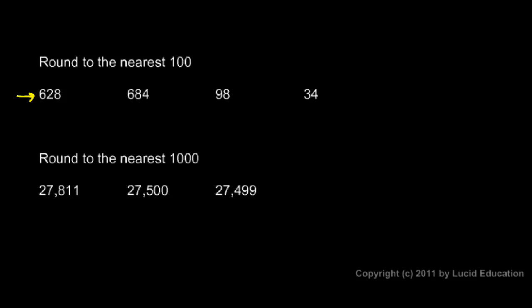Here we're told to round to the nearest hundred. For 628, we find the hundreds spot — that's the six — and look at the next digit, the two. That's less than five, so we round down, giving us 600. You can probably tell at a glance that 628 is closer to 600 than it is to 700. For 684 rounded to the nearest hundred, we look at the next digit — it's an eight, which is five or higher, so we round up, and our answer is 700. You can tell that 684 is closer to 700 than it is to 600.